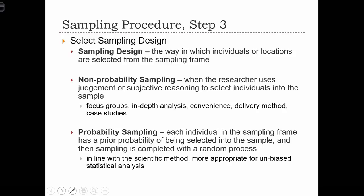Once we have a sampling frame, we need to select a sampling design. Here we are trying to decide how to choose individuals or locations from the sampling frame and enter them into our sample. We differentiate between probability and non-probability sampling, sometimes referred to as random and non-random sampling. With non-probability sampling, the researcher uses judgment or subjective reasoning to select individuals into the sample. This is often the case for small samples like focus groups or in-depth interviews, and typically relies on factors such as convenience or how the survey is to be delivered.